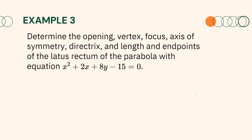Let us have our last example. Determine the opening, vertex, focus, axis of symmetry, directrix, and length and endpoints of the latus rectum of the parabola with equation x squared plus 2x plus 8y minus 15 equals 0. Once again, since the equation is given in general form, we need to rewrite it in standard form. First, isolate the squared term and the term with the same variable on the left side: x squared plus 2x equals negative 8y plus 15.